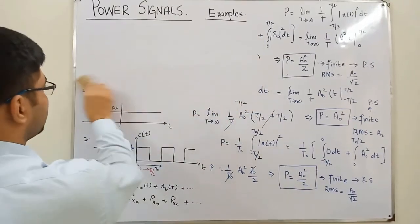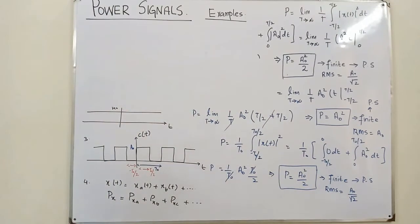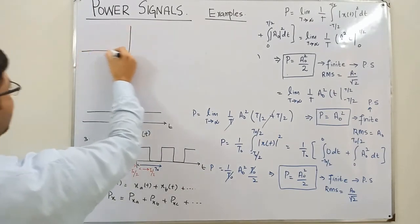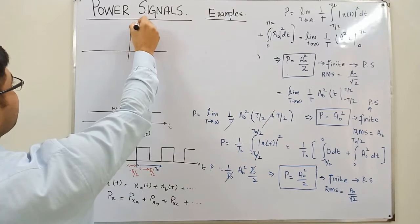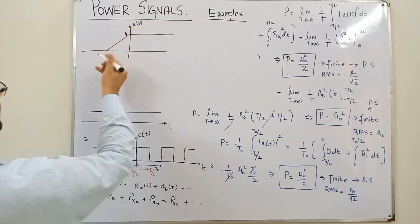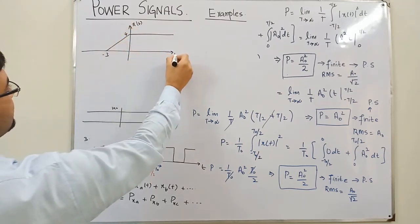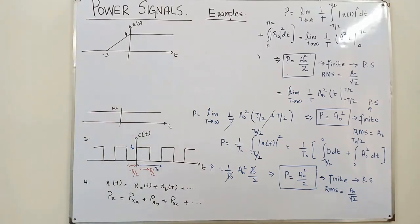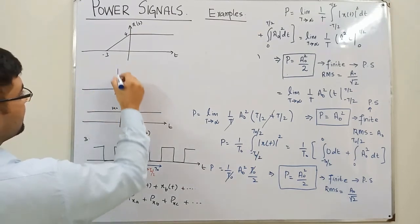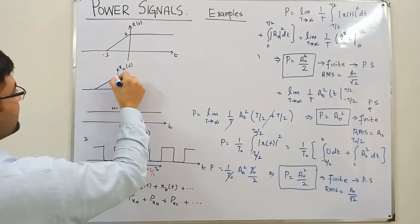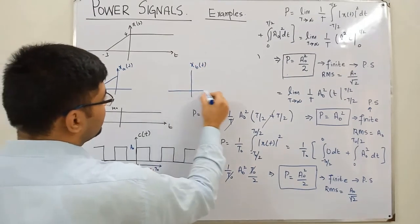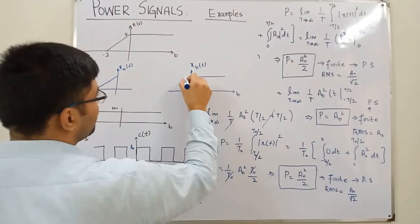Let's take an example. Say the function x(t) has a value of 4 and another value of −3 along the time axis. I can divide this into two parts: x_a(t) which is a linear graph portion, and x_b(t) which is a step signal with a step equal to 4.